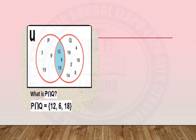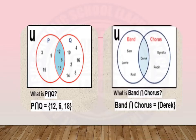Next example. We are given two sets, set Band and set Chorus. We are asked, what is the intersection of Band and Chorus? Based on the Venn diagram, their intersection is Derek. So, the intersection of Band and Chorus is Derek.